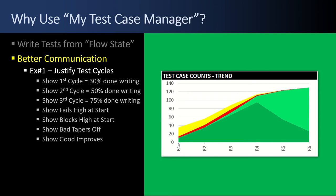You don't just sit down and in two days write 120 test cases — it takes time and you have to organize the approach. Even once all your test cases are written, you still have to execute against new builds that come out with bug fixes and unblocked features. Show that the fails are high at the start, then they taper off. Show the blocks are high at the start and they taper off. The bads taper off and the goods improve — show them that. Show them that test cycles are important because stability comes as you apply more test cycles. Testing isn't one and done, so use this tool to communicate that.